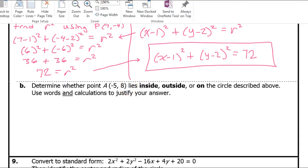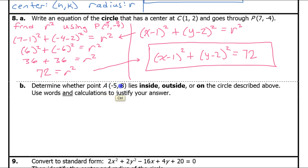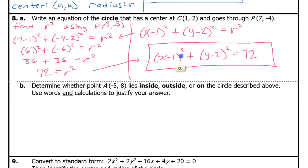Moving on to Part B: determine whether the point (-5, 8) lies inside, outside, or on the circle whose equation we just found. We substitute the point into the equation. If the point is on the circle, we should get 72. If we get a number less than 72, the point is inside the circle. If we get a number greater than 72, the point is outside the circle. Let's plug it in and see what happens.